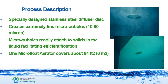The microfloat unit has a specially designed stainless steel diffuser disc. This disc creates very small micro-bubbles, 10 to 50 microns. These micro-bubbles easily attach to the fats, oil, and grease, and the solids in the wastewater and float them to the top. One microfloat unit can cover 64 square feet.